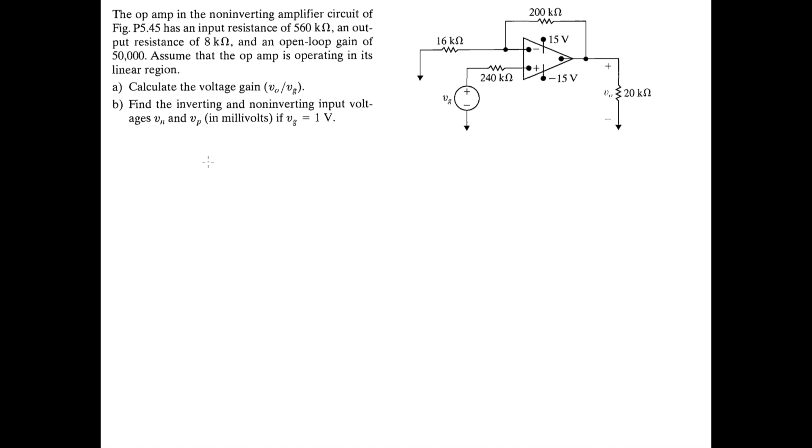In this video we're going to be going over a non-ideal operational amplifier that you can see in this figure right here. In this case it's a non-inverting amplifier, and it has an input resistance of 560 kilo-ohms, an output resistance of 8 kilo-ohms, and an open loop gain of 50,000. Assume that the op-amp is operating in its linear region.